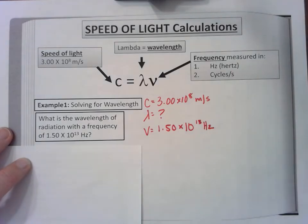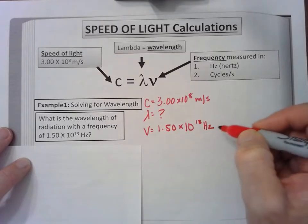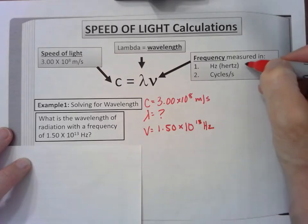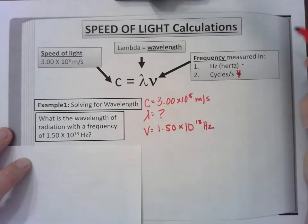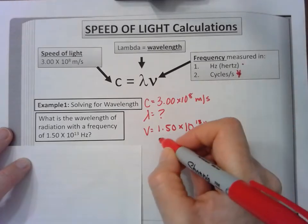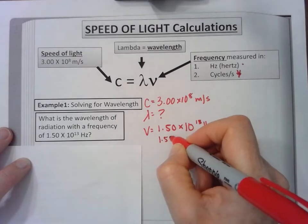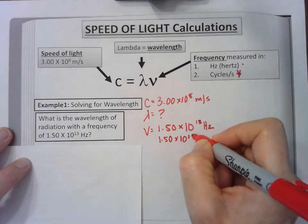I have to use this. How you rewrite that is: this number, 1.50 times 10 to the 13th, that is the cycles. There are that many cycles or waves that pass a given point per second.